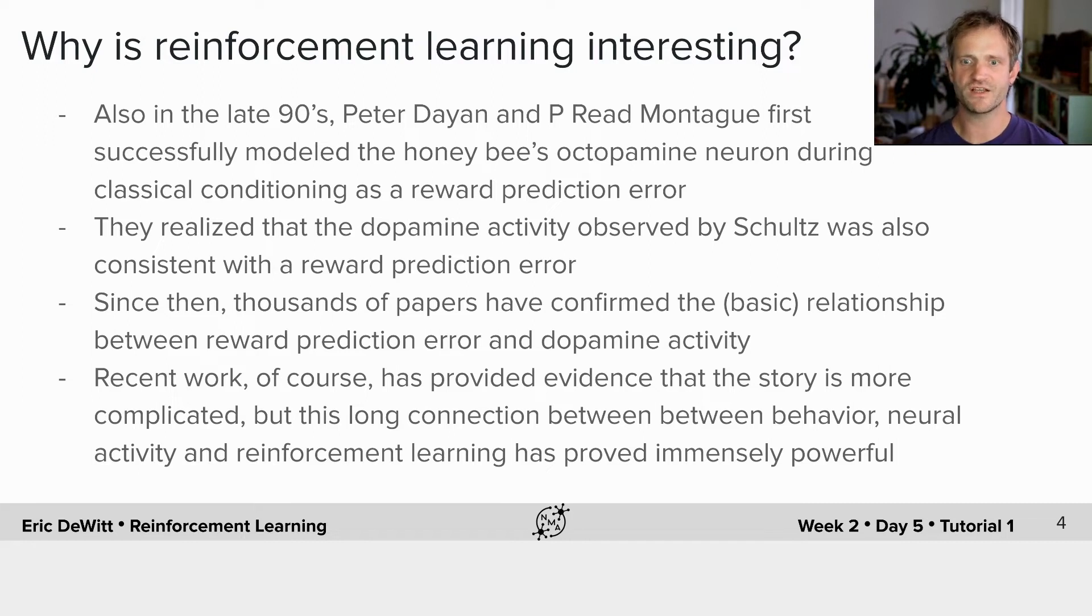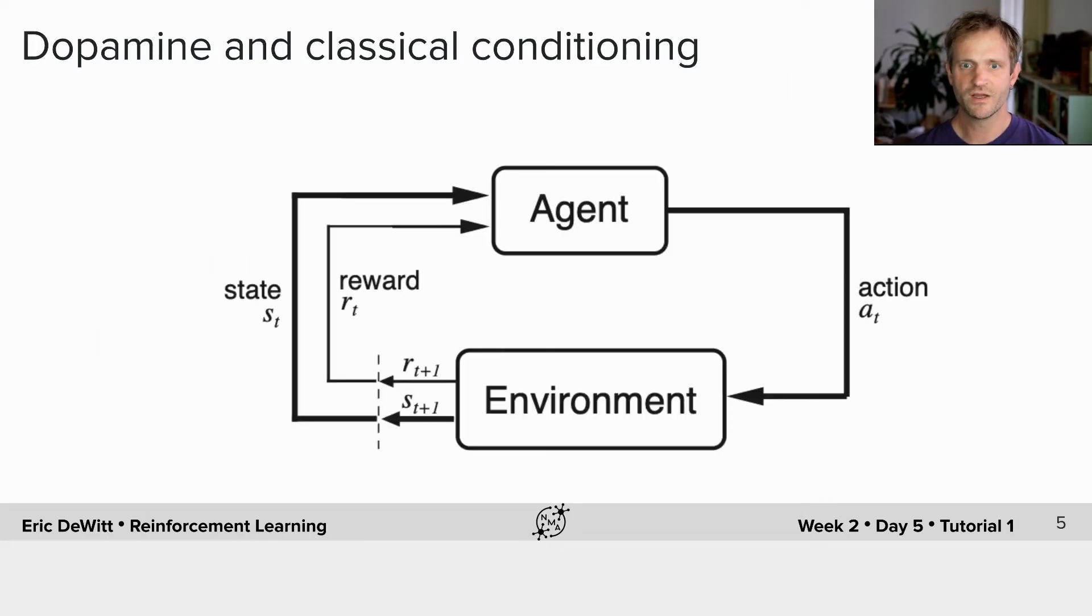Recent work, of course, has provided evidence that the story is more complicated. But this long connection between behavior, neural activity, and reinforcement learning has proved immensely powerful, and it's a framework that really allows us to think about how the whole brain might work together to produce actions. But let's start with dopamine and classical conditioning.